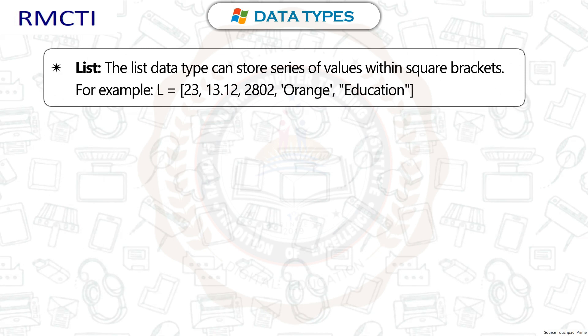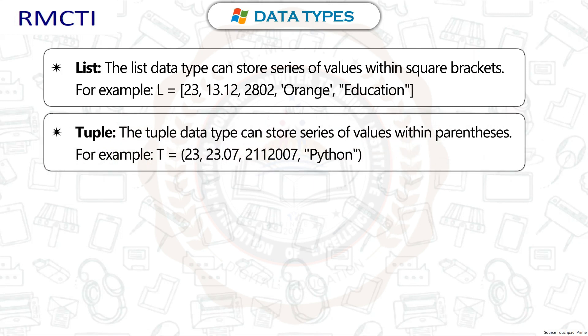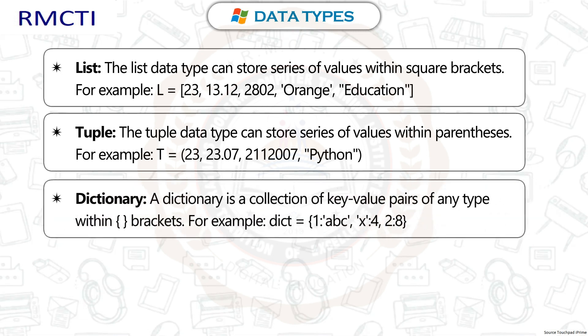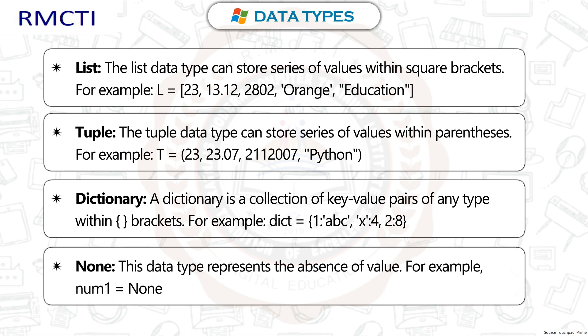List: The list data type can store a series of values within square brackets. For example, T = [23, 13.12, 2802, 'orange', 'education']. Tuple: The tuple data type can store a series of values within parentheses. For example, T = (23, 23.07, 211, 2007, 'Python'). Dictionary: A dictionary is a collection of key-value pairs of any type within braces. For example, DICT = {1: 'ABC', 'X': 4, 2: 8}. None: This data type represents the absence of value. For example, NUM1 = None.